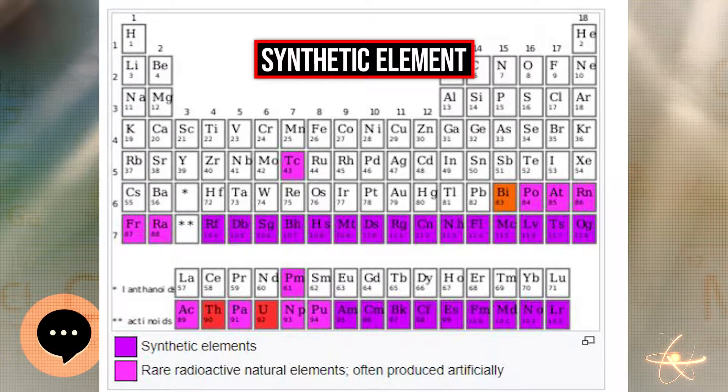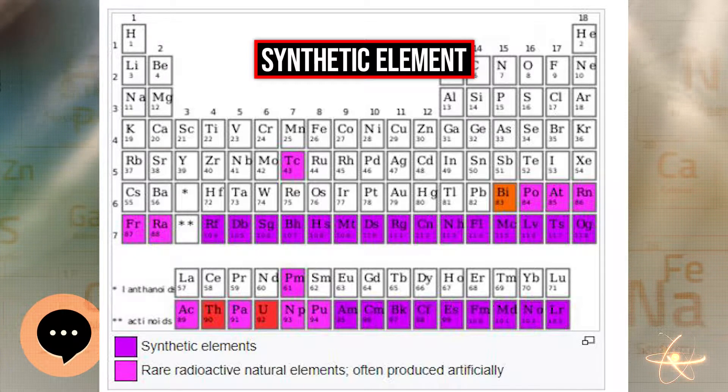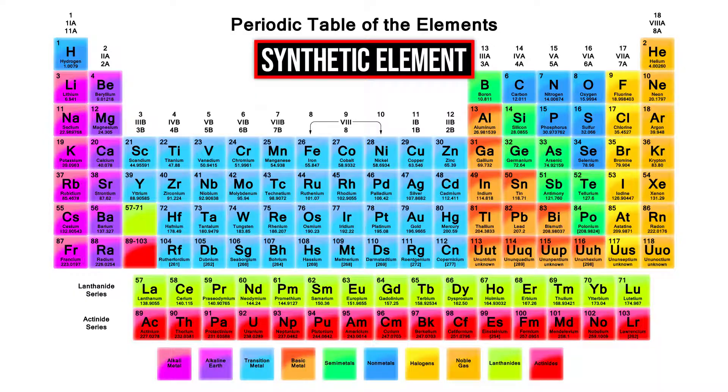Only minute traces of technetium occur naturally in the Earth's crust as a spontaneous fission product of uranium-238 or by neutron capture in molybdenum ores, but technetium is present naturally in red giant stars.